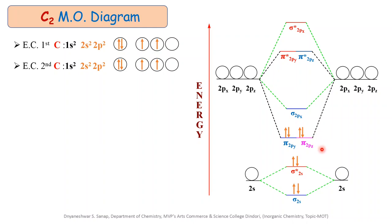This completes the filling of electrons in the molecular orbitals of the C2 molecule. The number of electrons in the bonding molecular orbitals is 2 + 2 + 2 = 6, and only 2 electrons are present in the anti-bonding molecular orbital. This information is required for further calculations, so we must keep it in mind.